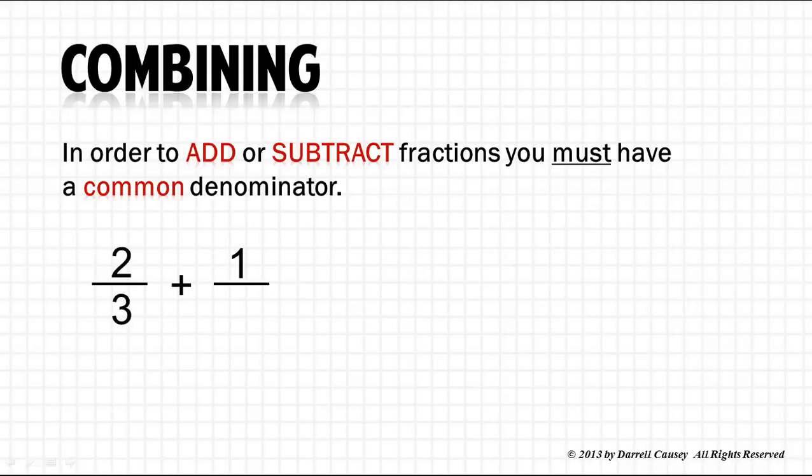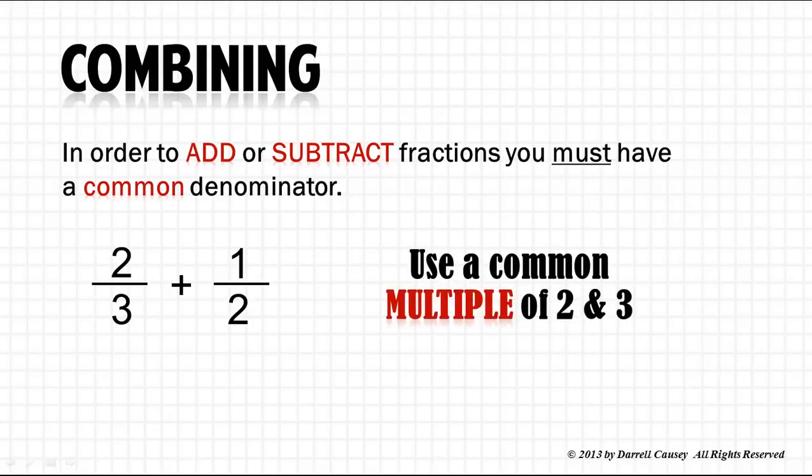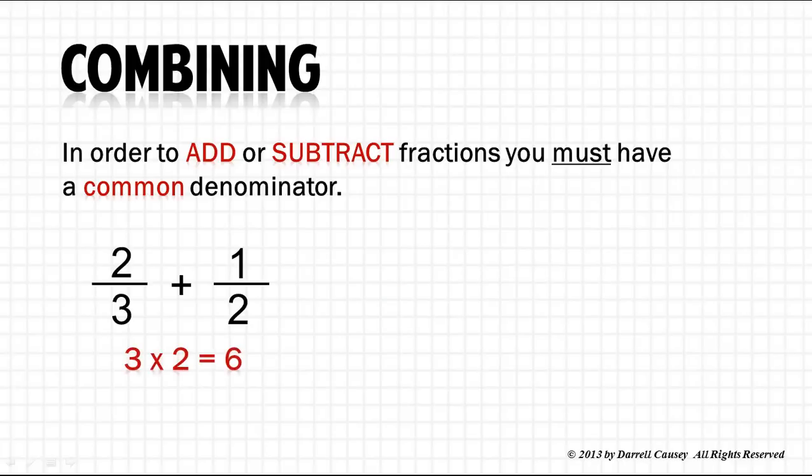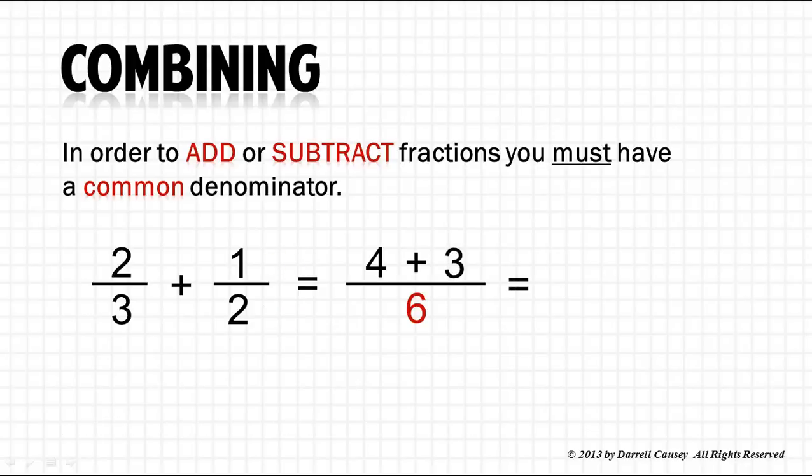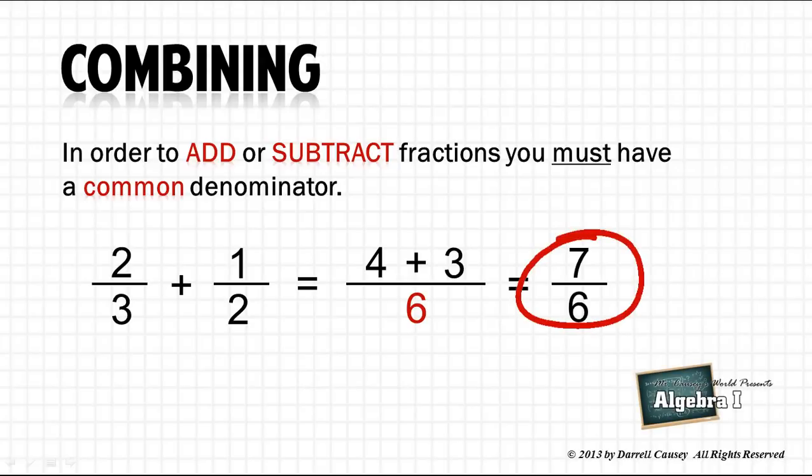Two-thirds plus one-half, they do not have a common denominator, so we must use a common multiple of two and three, and we know that three times two is six, so there's our common denominator. And so in order to get six, I would multiply three by two. Whatever I do to the denominator, I need to do to the numerator, and therefore, two times two is four. And then what would I do to the two? I would multiply by three, and so I do that also to the numerator, and one times three will give us three. And four plus three is seven, and our fraction is seven-sixths. There we have it, combining fractions.